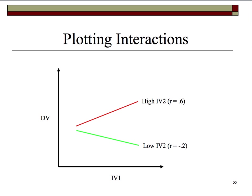Here we have on the vertical axis the DV, on the horizontal axis IV1. We have two line segments — a high IV2 and a low IV2. This is actually dichotomizing IV2, but for purposes of plotting interactions we have to do that. We'll see more about that later in this tutorial.